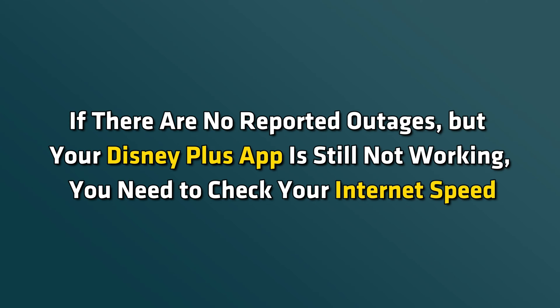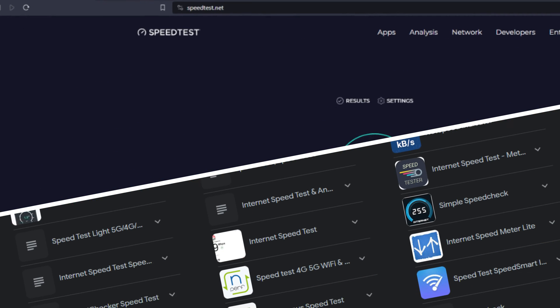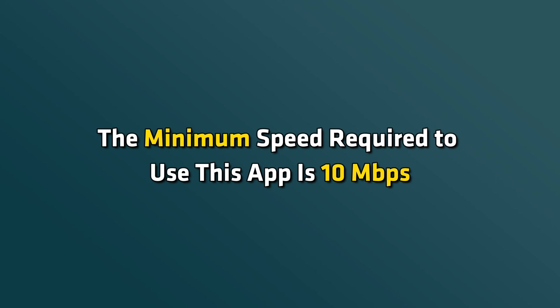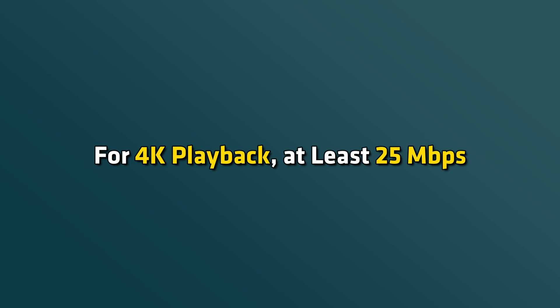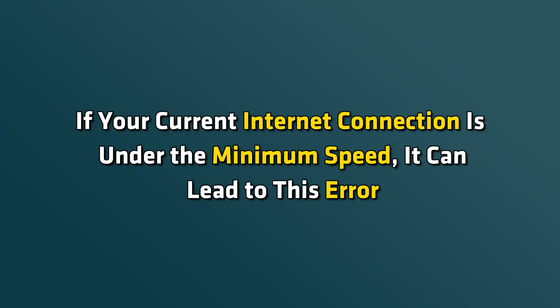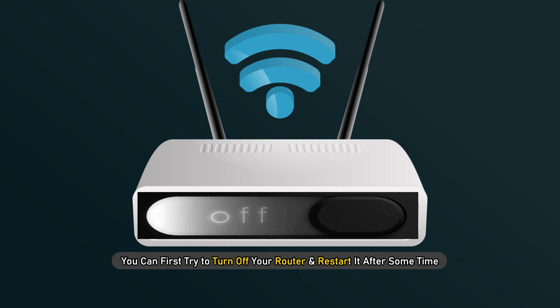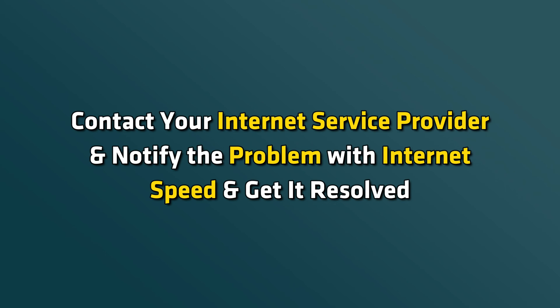Method 2: Check your internet speed. If there are no reported outages but your Disney Plus app is still not working, you need to check your internet speed. You can use various third-party websites and apps to test internet speed. The minimum speed required to use this app is 10 Mbps, and 4K playback requires at least 25 Mbps. If your current internet connection is under the minimum speed, it can lead to this error. You can first try to turn off your router and restart it after some time. And if that doesn't work, contact your internet service provider and notify them of the problem with internet speed and get it resolved.